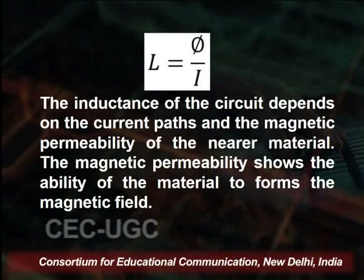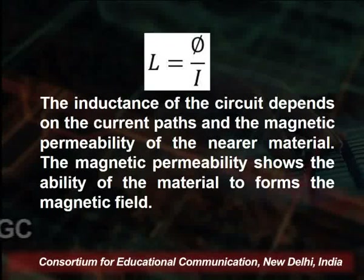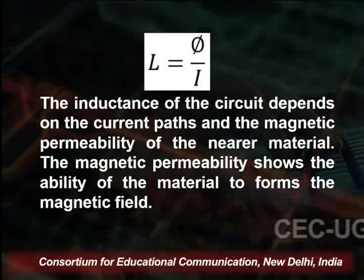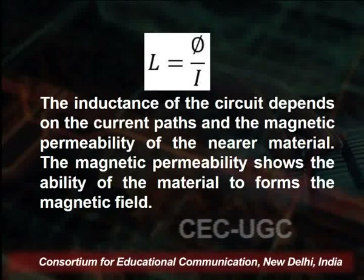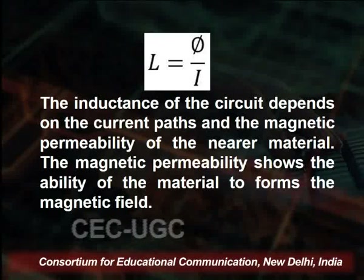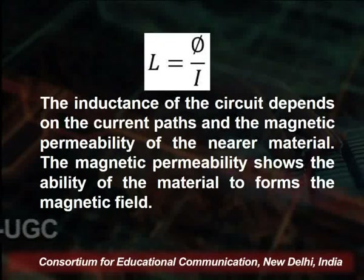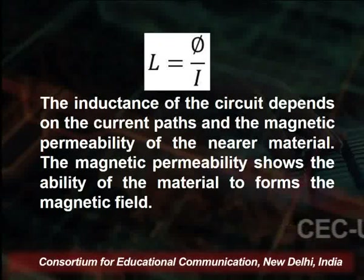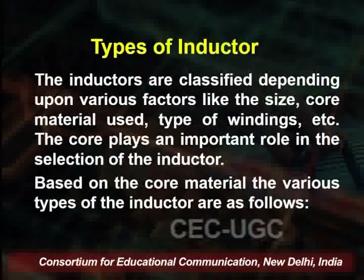Phi is the flux generated because of the magnetic field, and I is the current applied. The inductance L of the circuit depends upon the current — the path of the current — and the magnetic permeability of the nearby material, because the magnetic field generated depends upon the magnetic properties of the material. The magnetic permeability is the ability of the material to form the magnetic field.